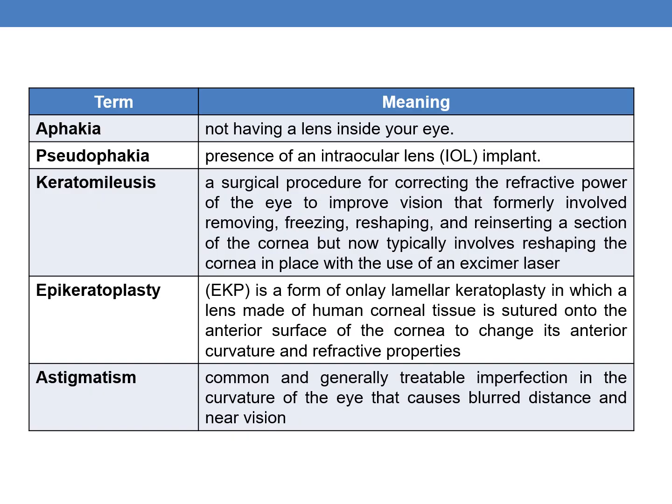Coming to the first term, it is aphakia. Phakia means lens. Aphakia means not having a lens inside your eye. The next term is pseudophakia. Pseudo means false. Pseudophakia is nothing but the presence of an intraocular lens — that is, the presence of a false lens, an intraocular lens implant, IOL.